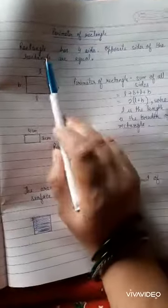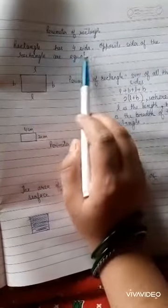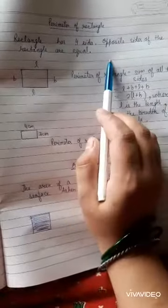So now we will learn about perimeter of rectangle. So rectangle has 4 sides. Opposite sides of the rectangle are equal.